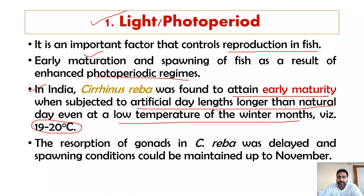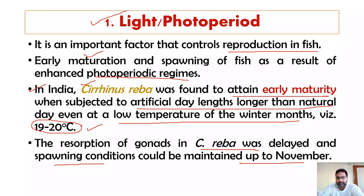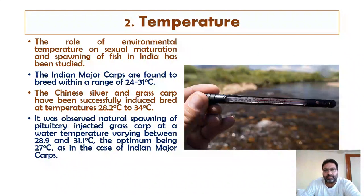Even at 19 to 20 degrees centigrade, light plays an important role — though the temperature was low, when the length of the day was artificially lengthened, Cirrhinus reba bred at 19 to 20°C. The resorption of the gonads in Cirrhinus reba was delayed under spawning conditions and could be maintained up to November when the photoperiod was enhanced.